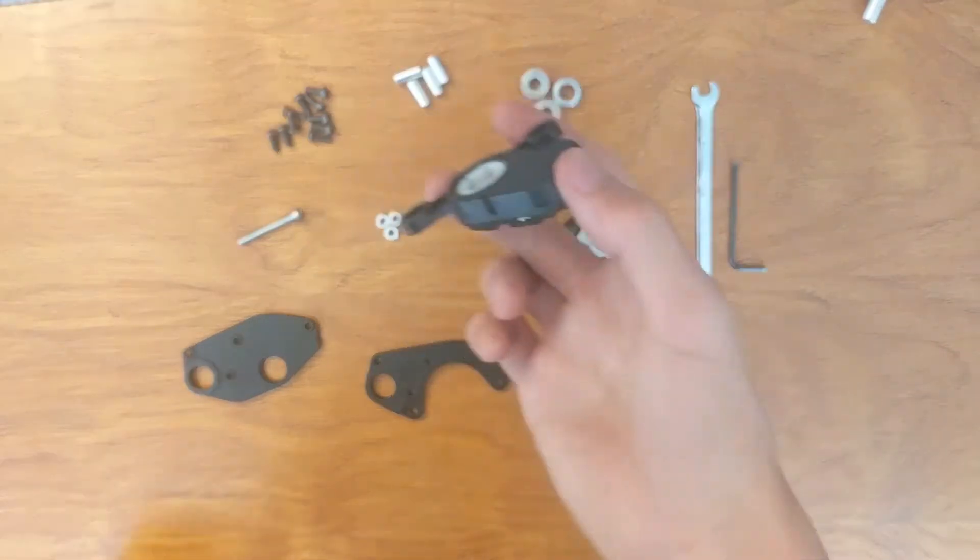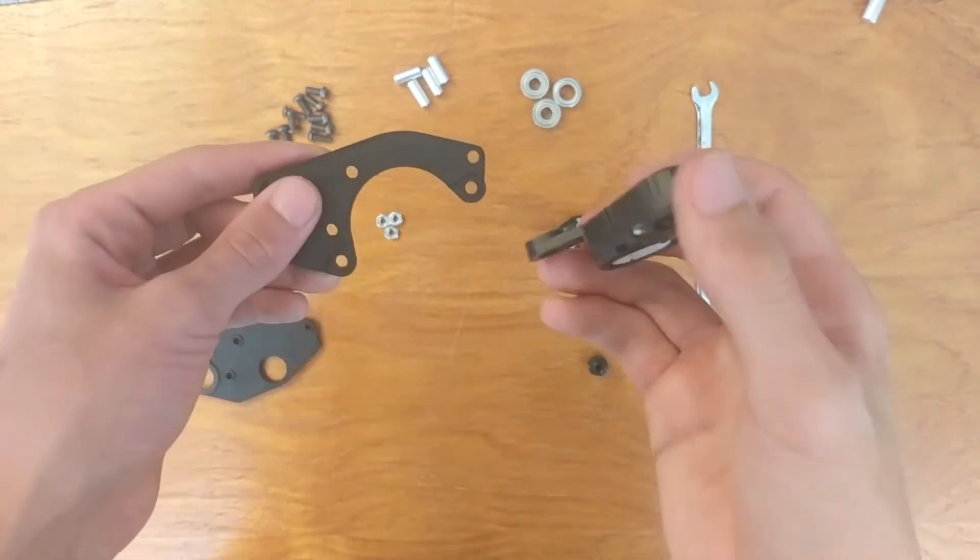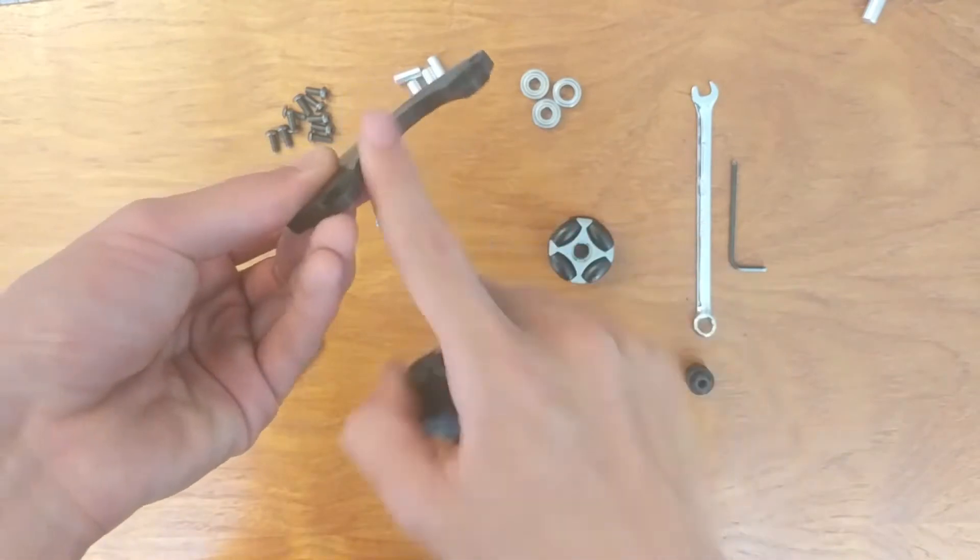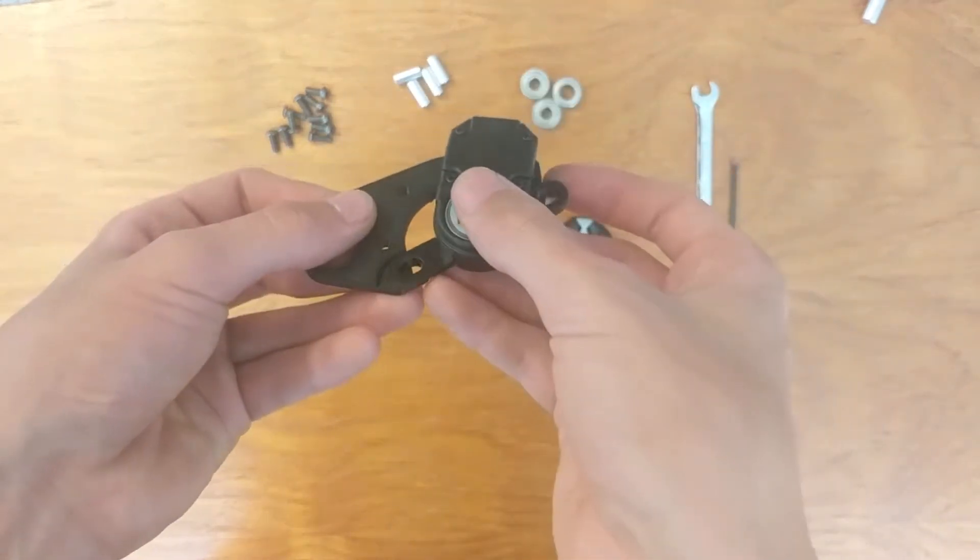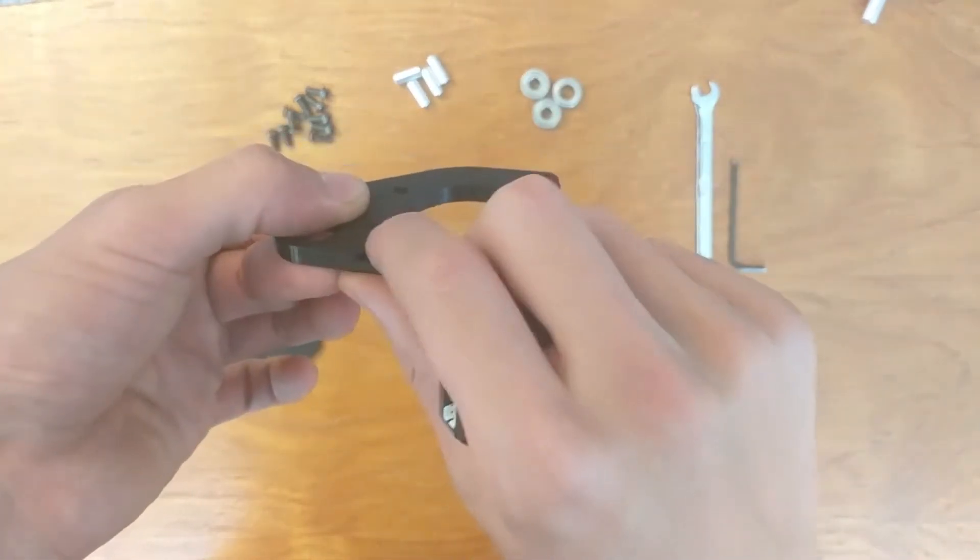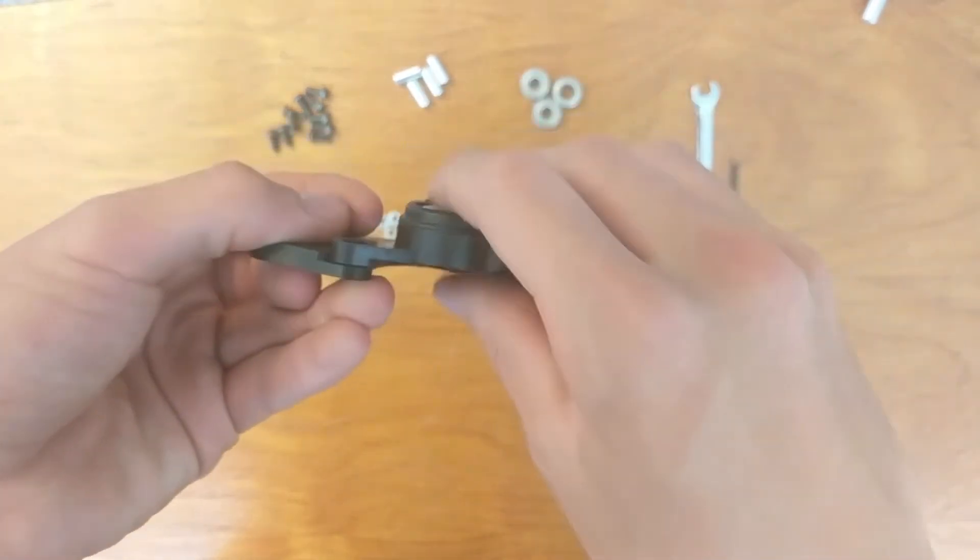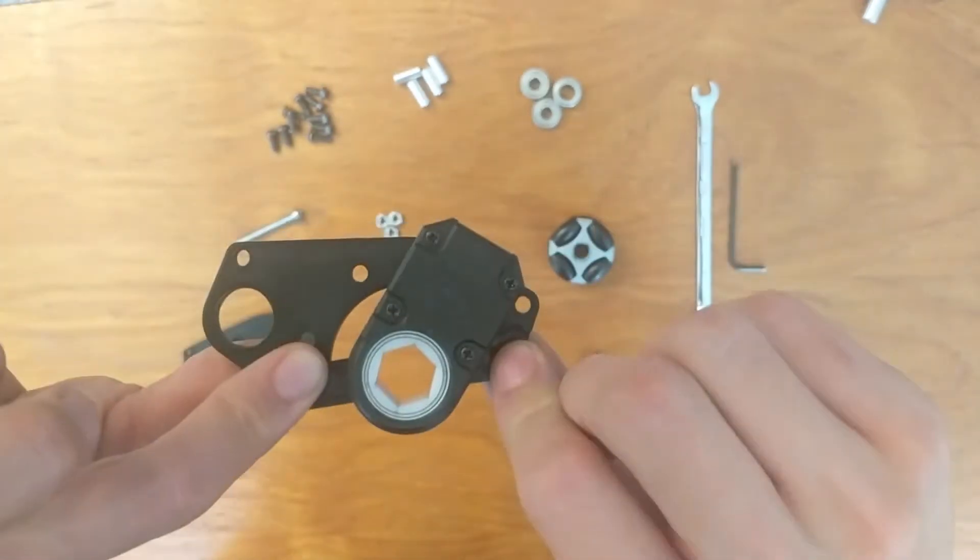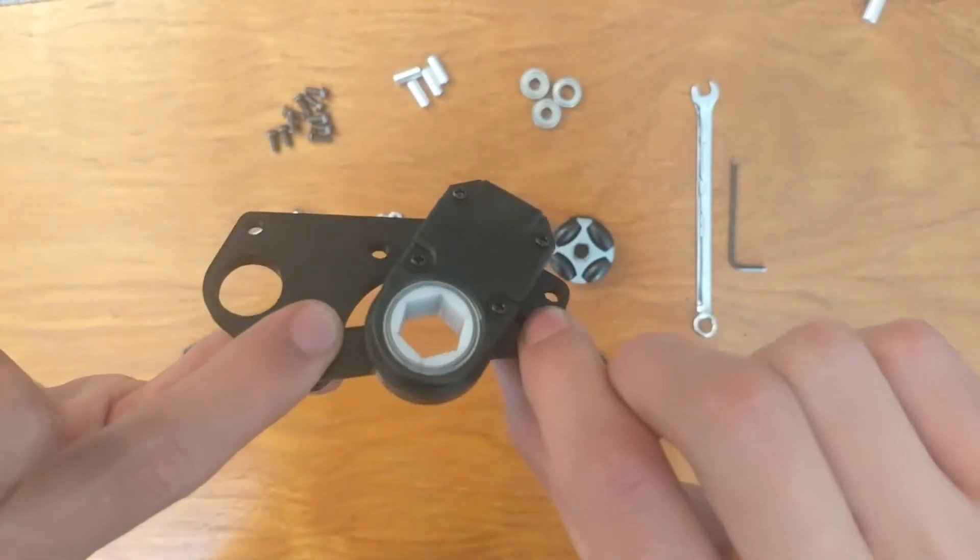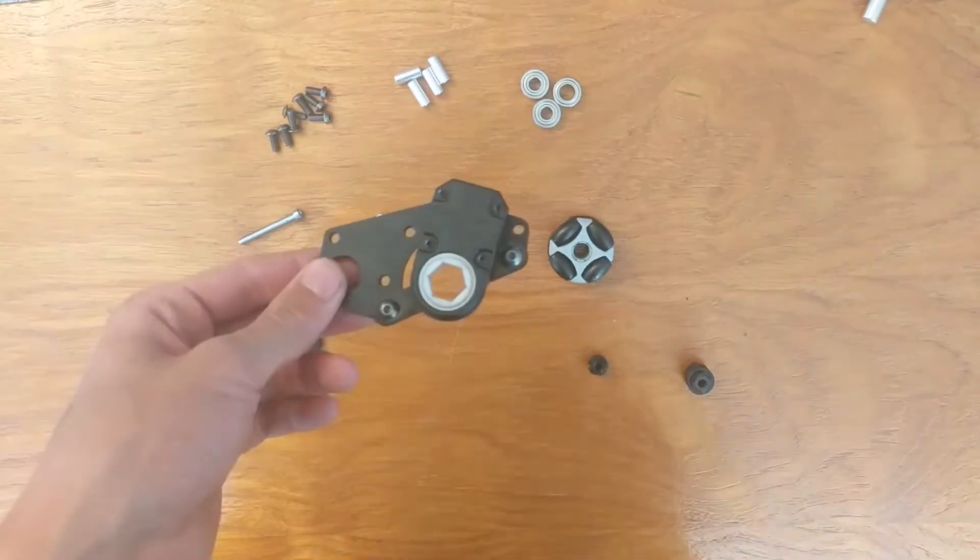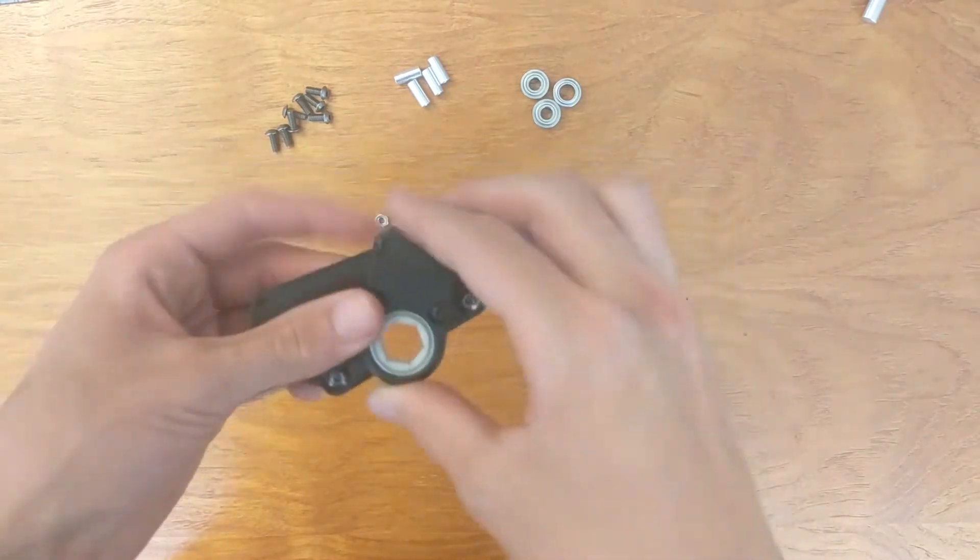To start off, let's take our REV encoder and the 3D printed plate with the circle cut out of it and screw them into each other so that the dents or the insets of the plate fit into the REV encoder. Go ahead and screw these together.